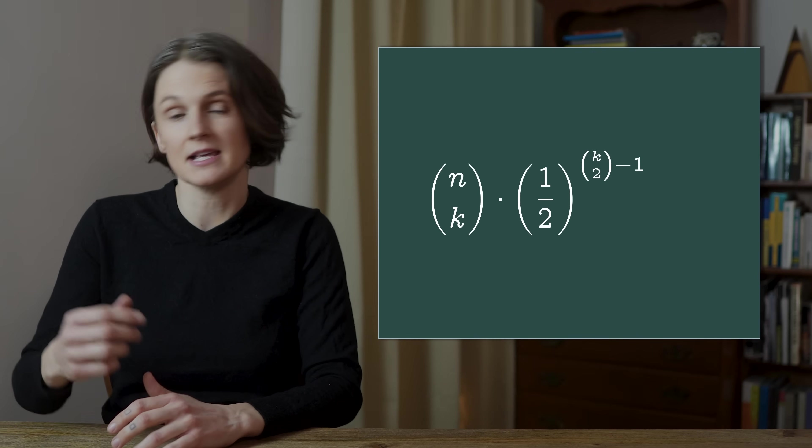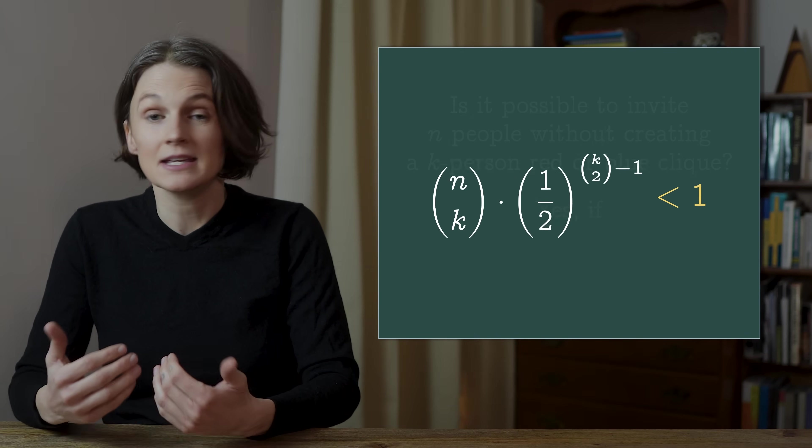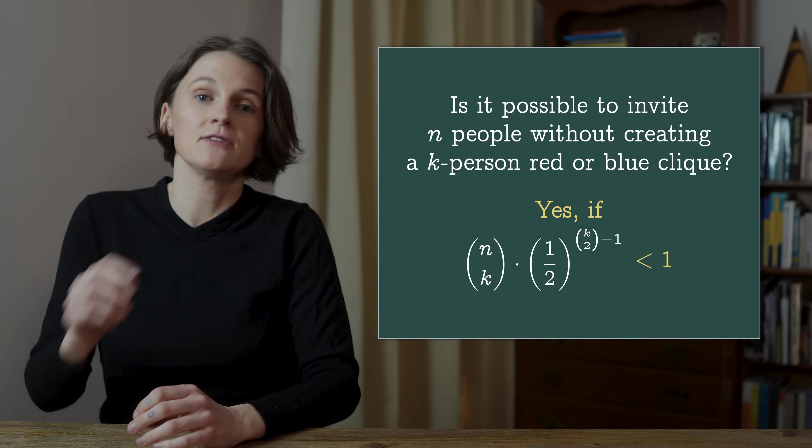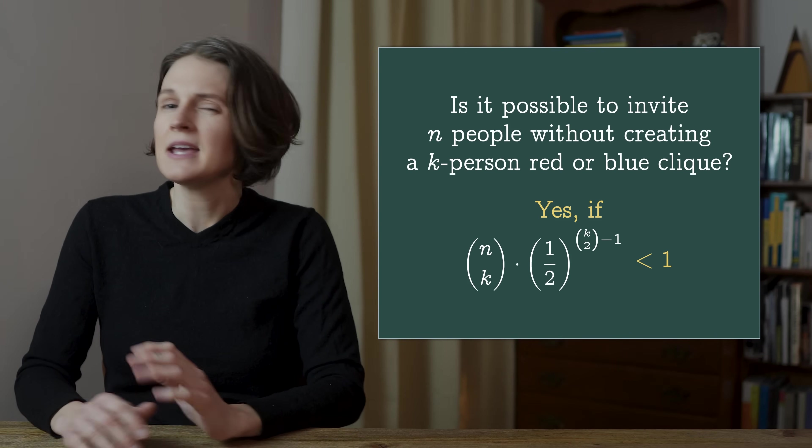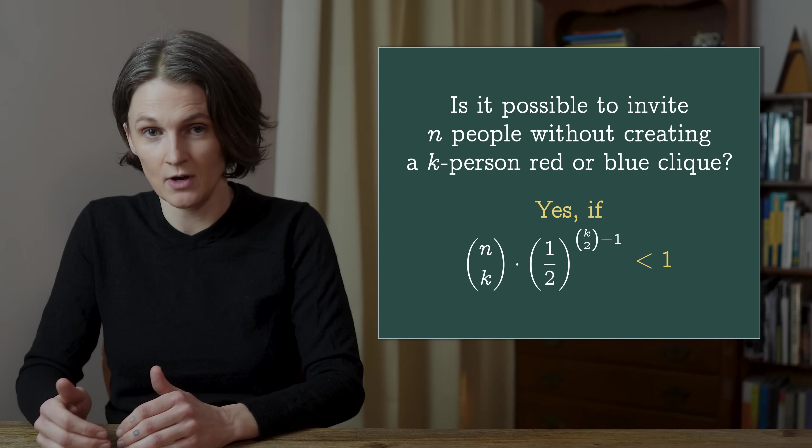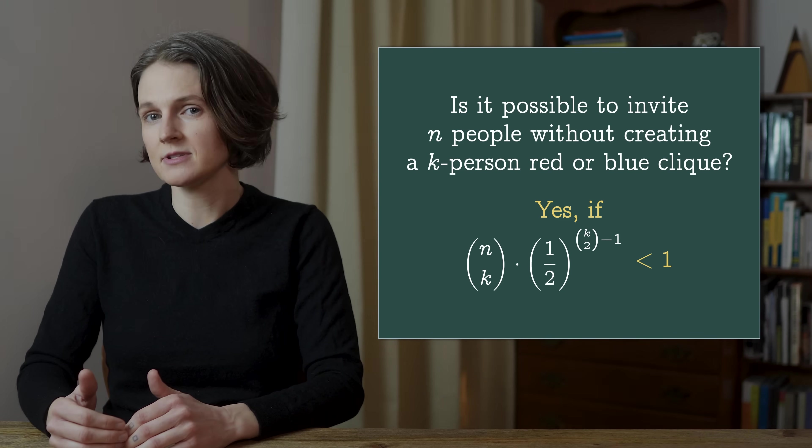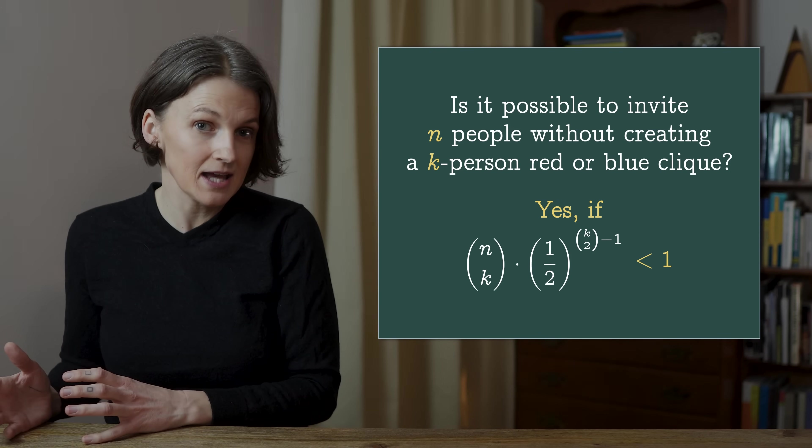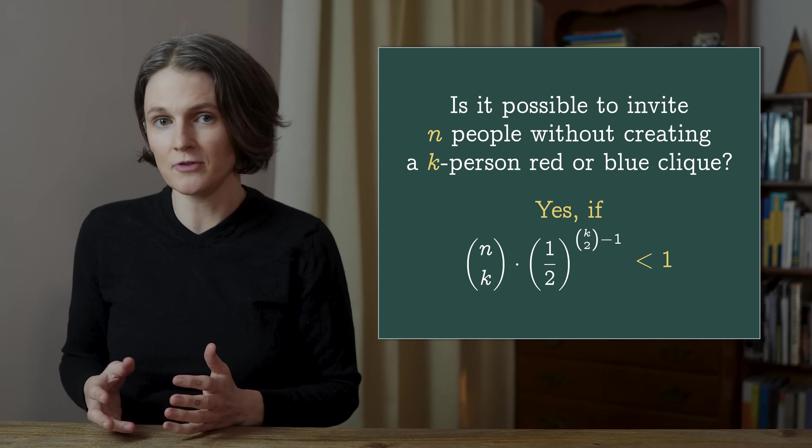But the argument only works if this is less than 1. So Erdos's answer is yes, it's possible, if this is less than 1. It doesn't tell us anything about what happens if that number is bigger than 1. This is a bound. It gives us information for certain values of n and k, but it's not helpful for others.